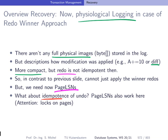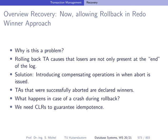What about idempotence of undo? Since we still assume logs on pages, the page log sequence numbers are sufficient to ensure idempotence of undo, because with logs on pages the losers' actions are at the end of our history. Now if we allow rollback while still in the redo-winners approach, a new problem arises: transactions that are rolling back — those losers — are not necessarily at the end of the log or history. Therefore, what we now need are compensation log records to ensure idempotence.